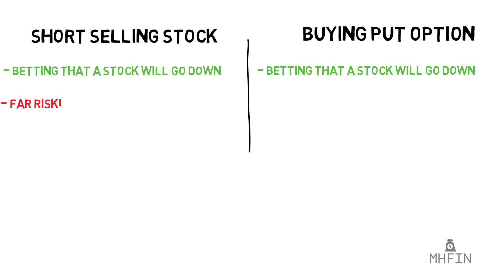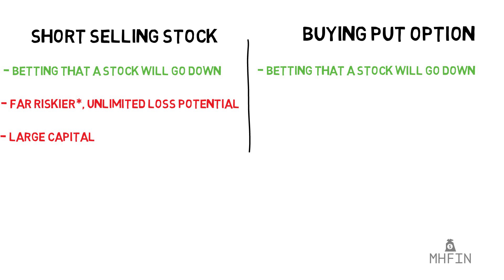The major difference between the two strategies is that short selling exposes Mike to unlimited loss potential, meaning he in theory could lose an infinite amount of money. Because of this, brokerage firms usually require a large amount of capital. The advantage to short selling and this large amount of risk is that you can wait an infinite amount of time prior to executing your short sell trade. There is no time sensitivity in waiting for Apple's price to fall.